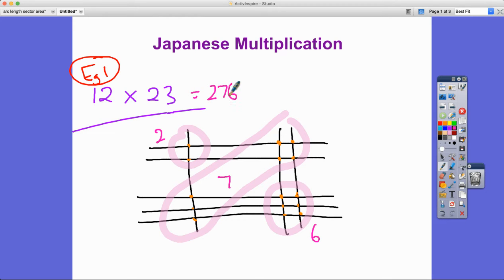If you don't believe me, we can do it by long multiplication. 12 multiplied by 23: two times three is six, one times three is three. Put the zero in, two times two is four, one times two is two. Then we add up and get 276. Isn't it just amazing? I absolutely love it.